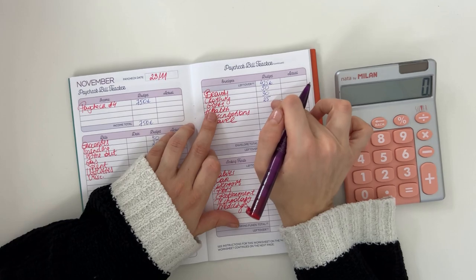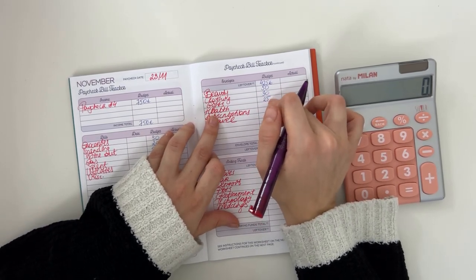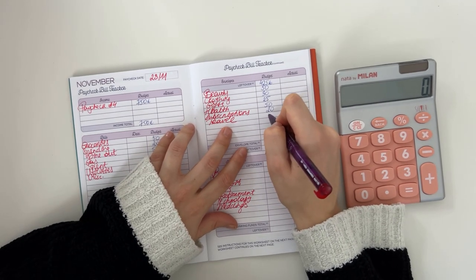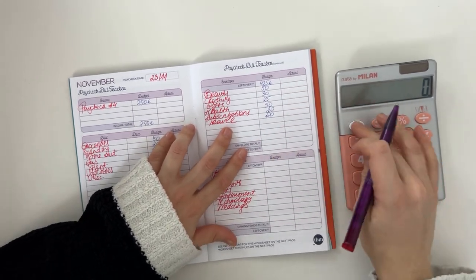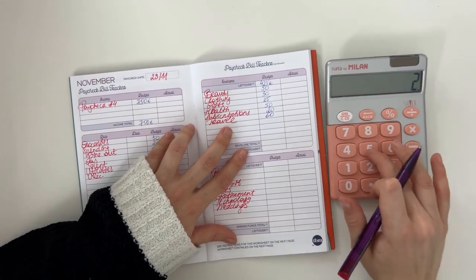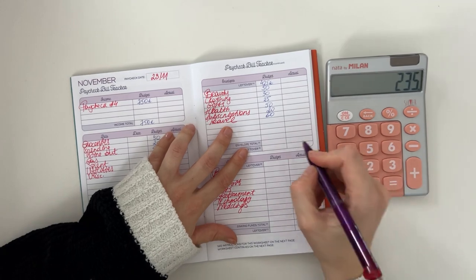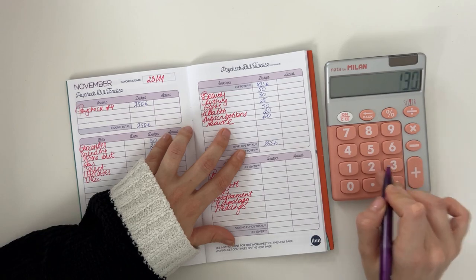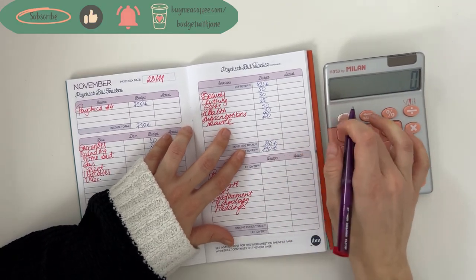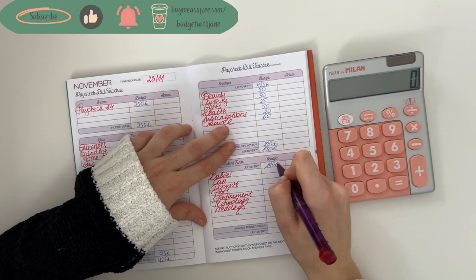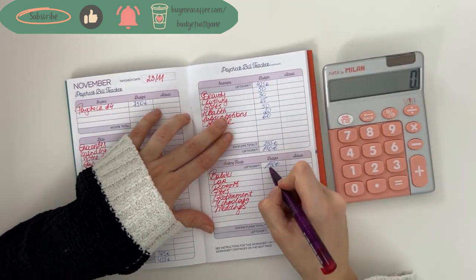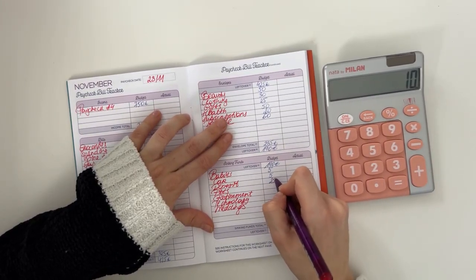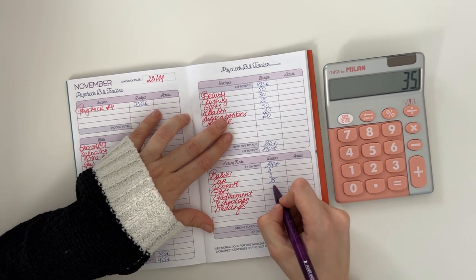So in total for short-term sinking funds that's going to be 235 euros. So 425 minus 235 is 190. So 190 we're bringing down to long-term sinking funds. We are putting 5 into babies, 5 into car, 25 is going into deposit, pets is going to get 5, and technology and weddings each getting 5. So that is in total 50 euros. So 190 minus 50 is 140.